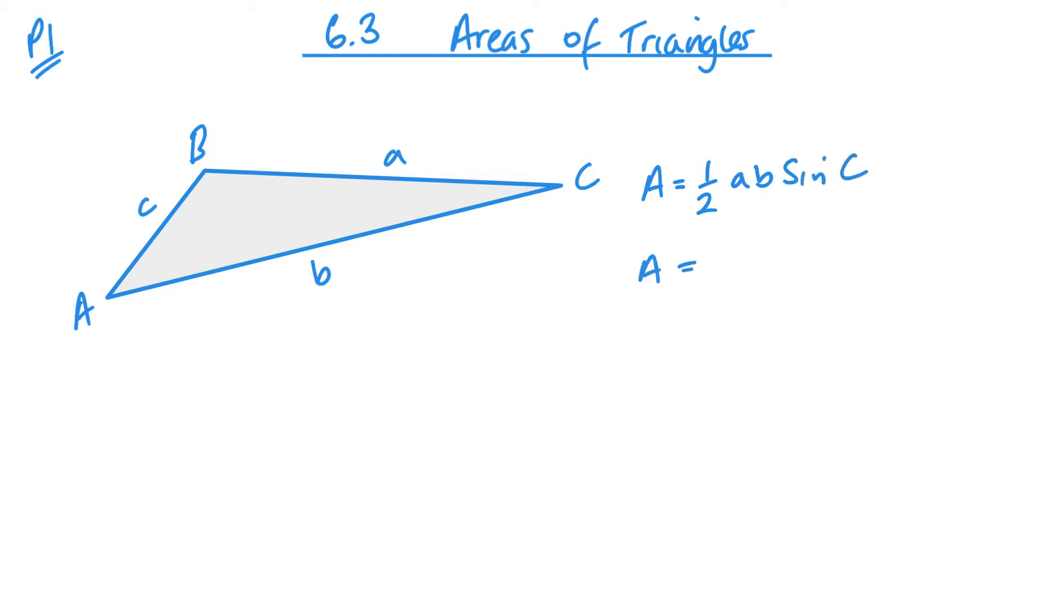That could also mean I could have, for example, A and C as the sides and angle B, or equally I could have B and C as the sides and angle A.